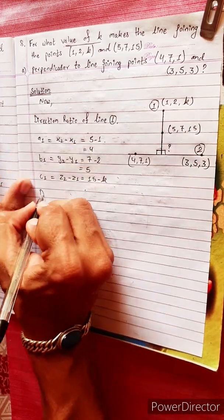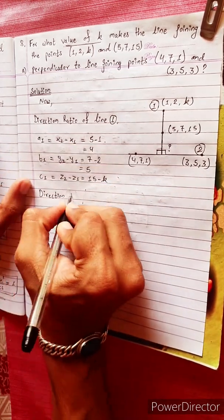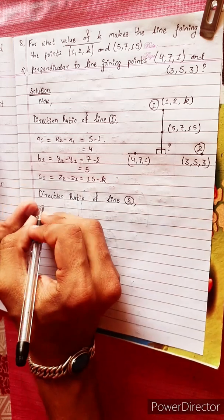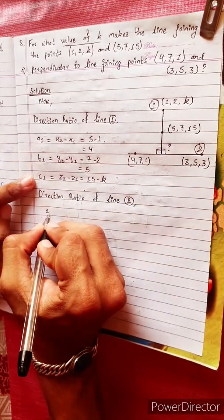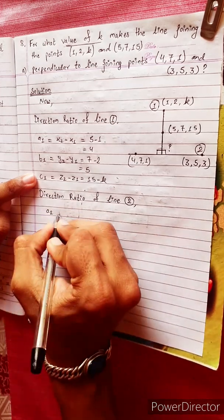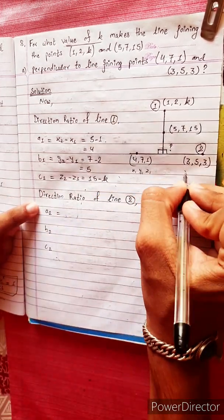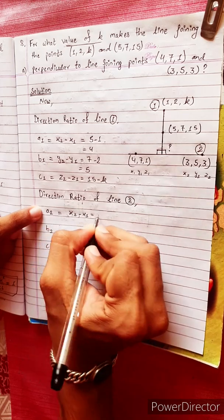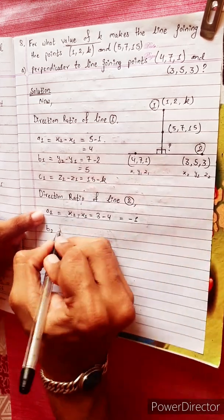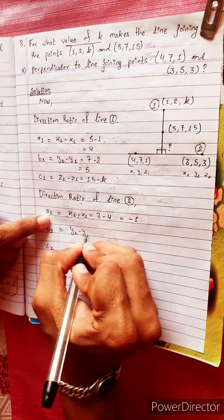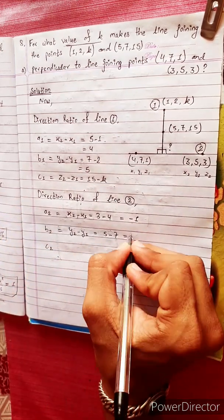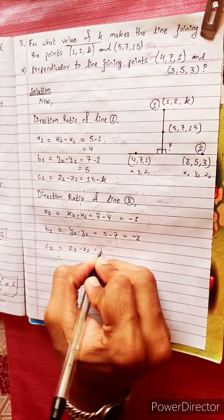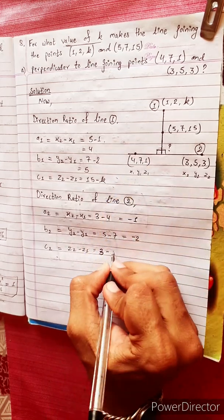For Line 2: x2, y2, z2. a2 equals x2 minus x1, equals 3 minus 4, equals minus 1. b2 equals y2 minus y1, equals 5 minus 7, equals minus 2. c2 equals z2 minus z1, equals 3 minus 1, equals 2.